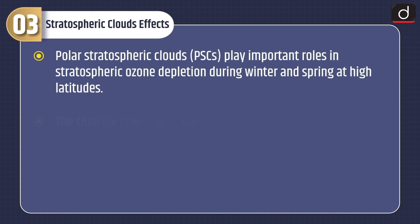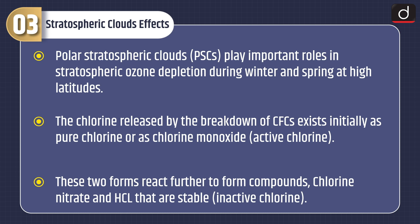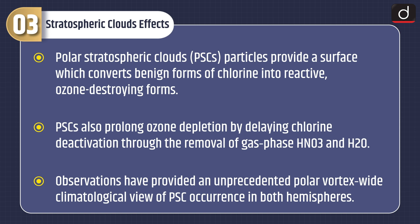Now let's discuss about stratospheric clouds' effects. Polar stratospheric clouds or PSCs play important roles in stratospheric ozone depletion during winter and spring at high latitudes. The chlorine released by the breakdown of CFCs exists initially as pure chlorine or as chlorine monoxide — active chlorine. These two forms react further to form compounds chlorine nitrate and HCl that are stable inactive chlorine. PSC particles provide a surface which converts benign forms of chlorine into reactive ozone-destroying forms. PSCs also prolong ozone depletion by delaying chlorine deactivation through the removal of gas phase HNO3 and H2O. Observations have provided an unprecedented polar vortex-wide climatological view of PSC occurrence in both hemispheres.